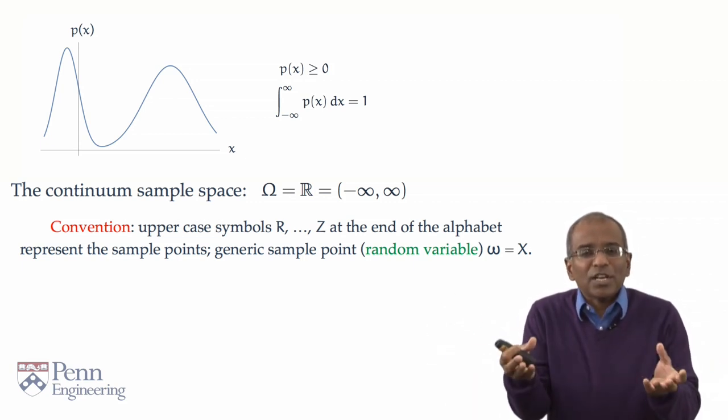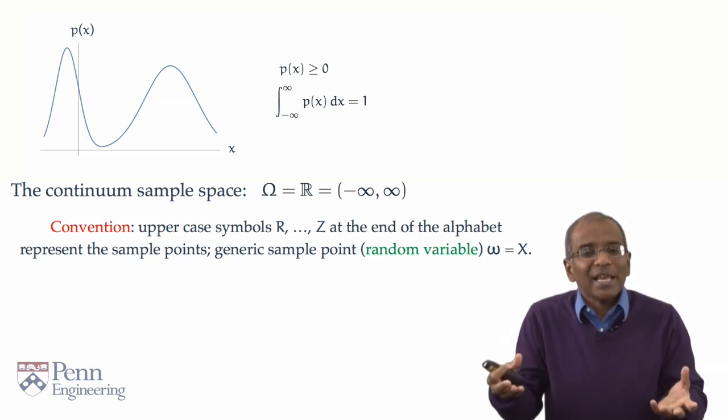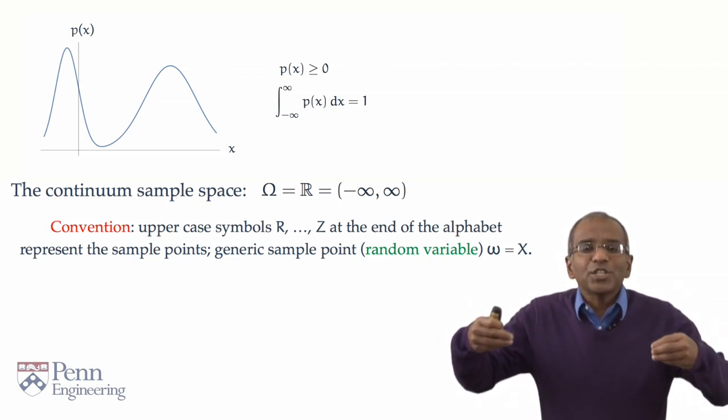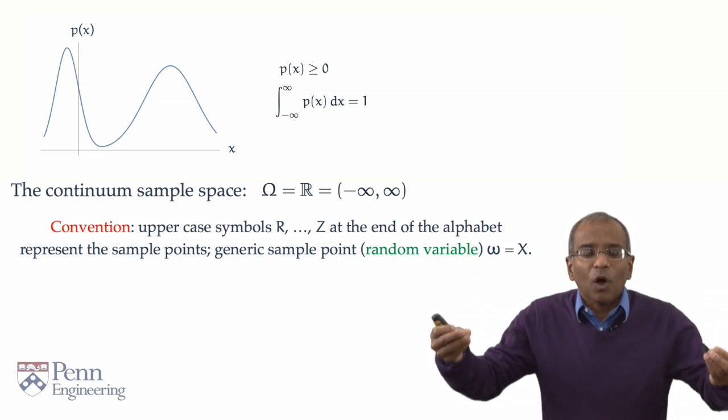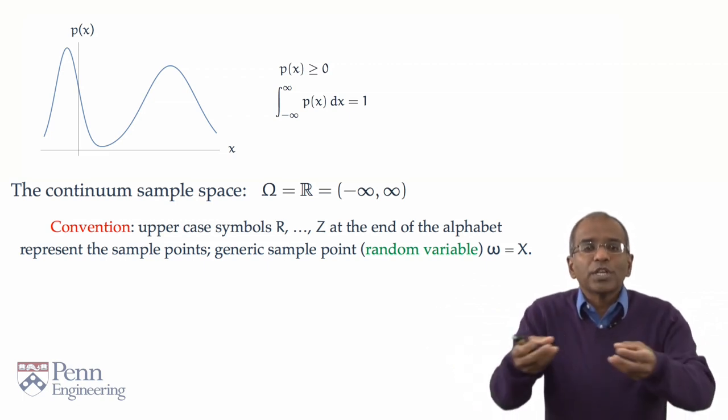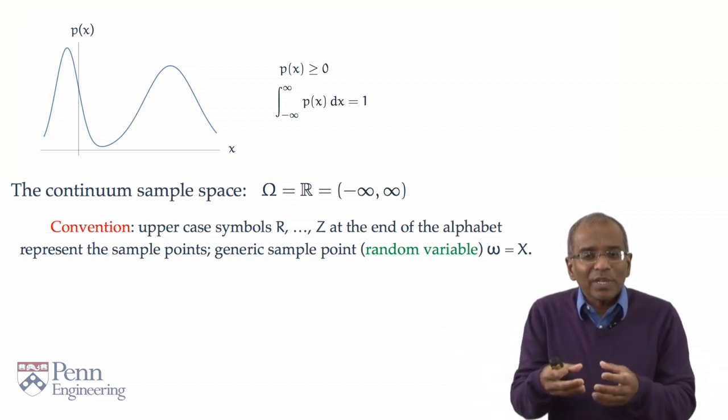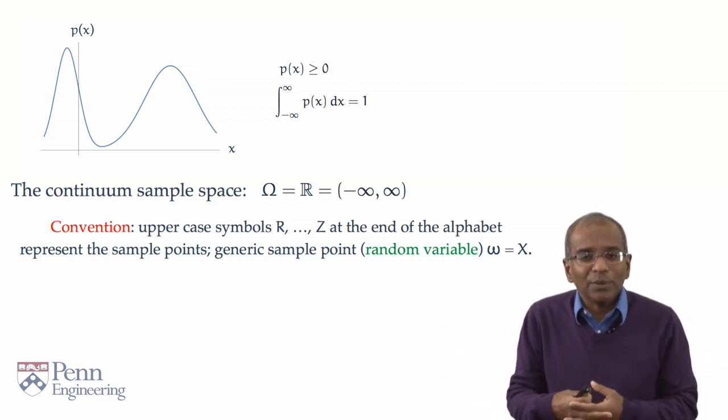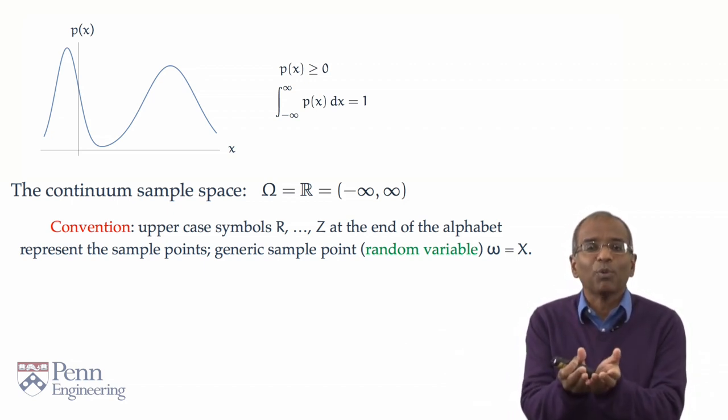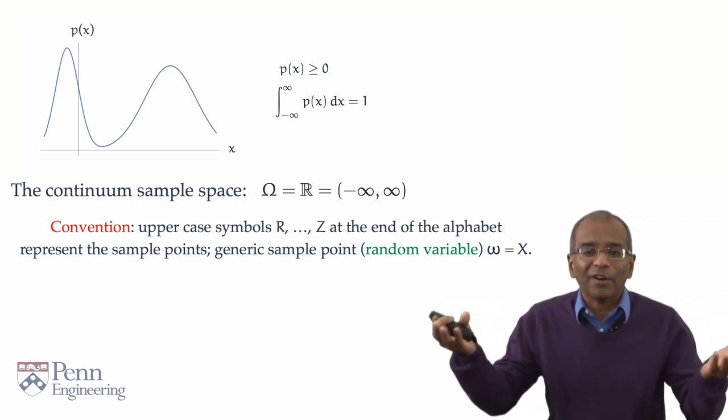A generic such letter, of course, is uppercase X. And this will represent for us a generic outcome of a chance-driven experiment, which gives rise to a continuum of possible values. Since we now are dealing with a numerical value, it is natural to call such a sample point a random variable.